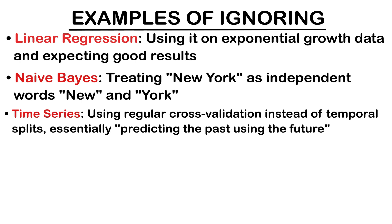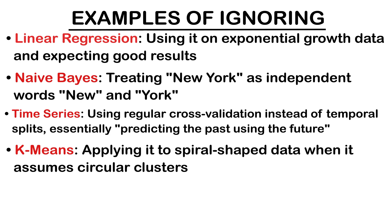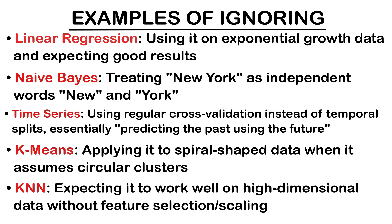K-means — applying it to spiral-shaped data when it assumes circular clusters. K-NN — expecting it to work well on high-dimensional data without feature selection or scaling. The fix: either transform your data to meet assumptions or choose an algorithm that matches your data's reality.